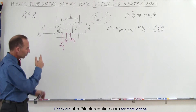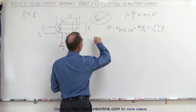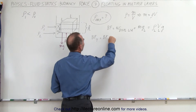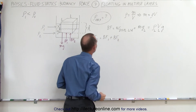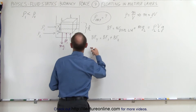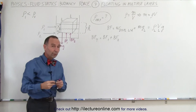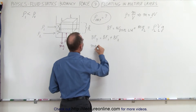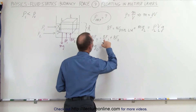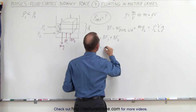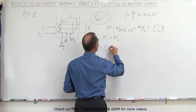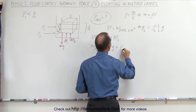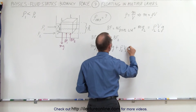The total buoyancy force equals the sum of buoyancy force 1 plus buoyancy force 2. Since the object is floating, the total buoyancy force must equal the weight of the object. So: mg of the object equals BF1 plus BF2, which is density 1 times volume 1 times g, plus density 2 times volume 2 times g.